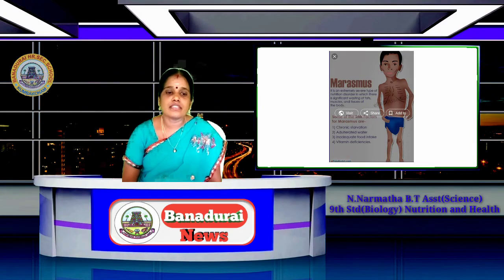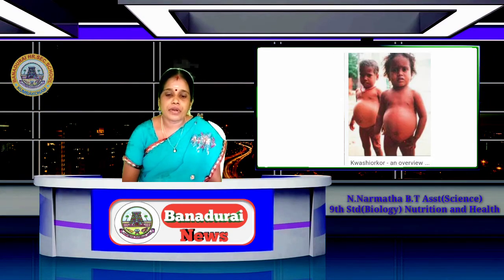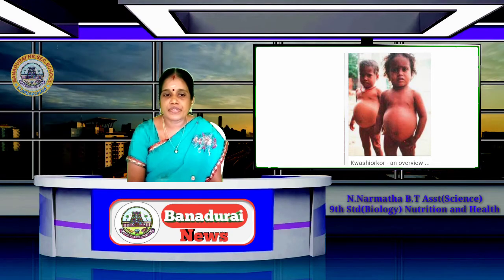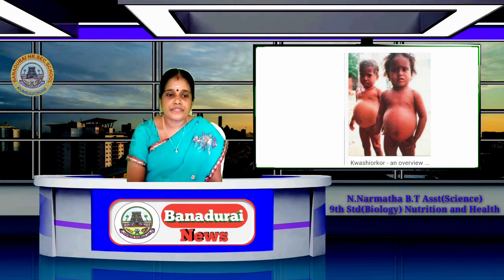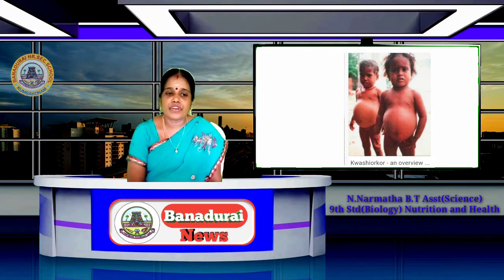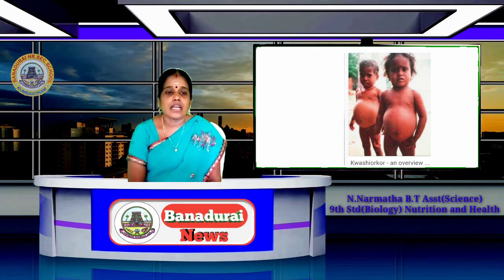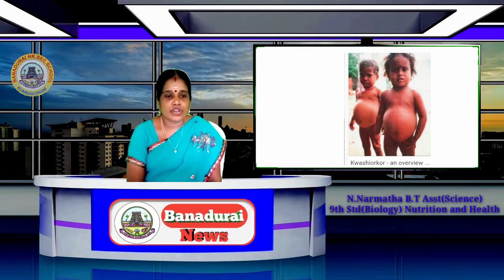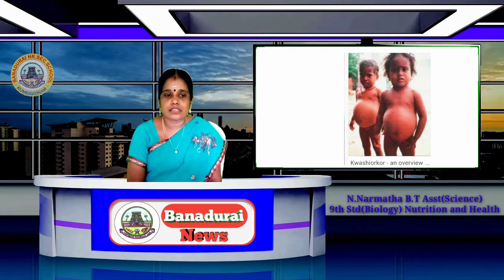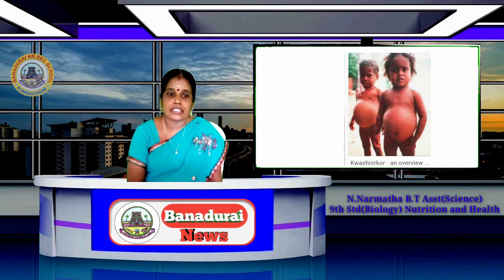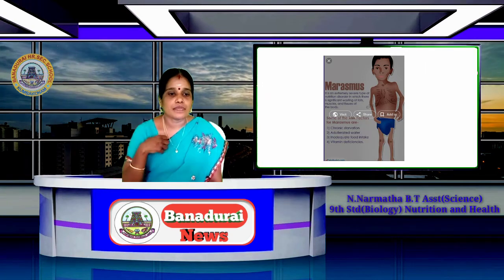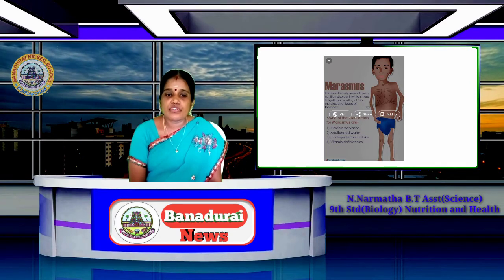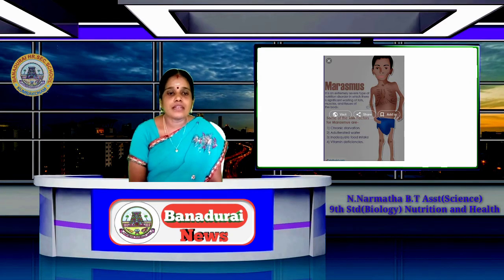Kwashiorkor and marasmus are two diseases caused by protein deficiency. It is a condition of severe protein deficiency. It affects children between one to five years of age. It affects your body a lot.